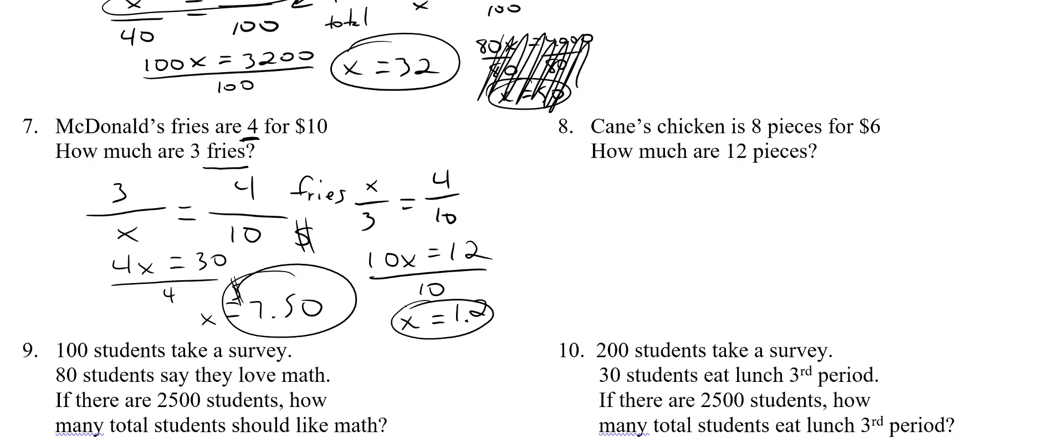Now again, doesn't that make sense? If 4 fries are 10 bucks, shouldn't 3 fries be less? Once again, if you set it up wrong, let's say I did it this way, 4 over 10 and x over 3, you would get 10x equals 12, then divide both sides by 10, you get x equals 1.2. Now granted, it's less, but think logically. Four fries for $10, and how much are 3 fries? A buck 20? Does not sound right. It's got to be obviously something higher than a buck 20, because 4 for $10 means $2.50 each. So it certainly can't be a buck 20 for 3 of them. So just keep the same units. On top, fries, and then the bottom is money.